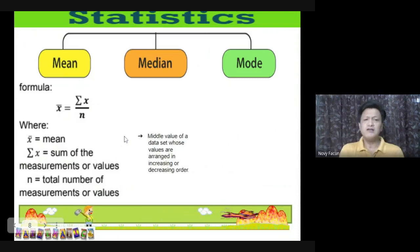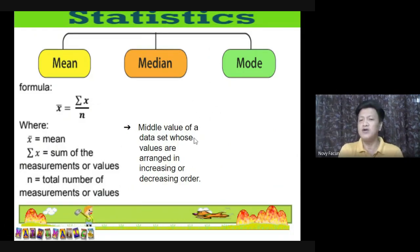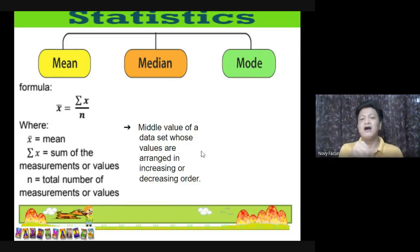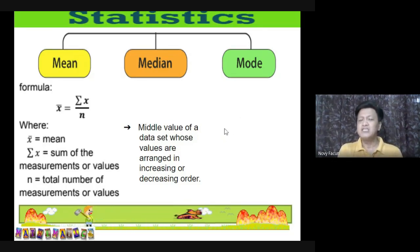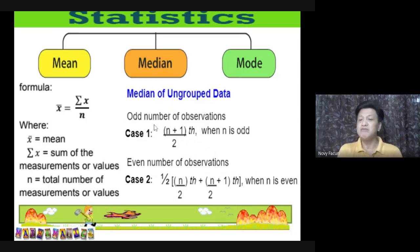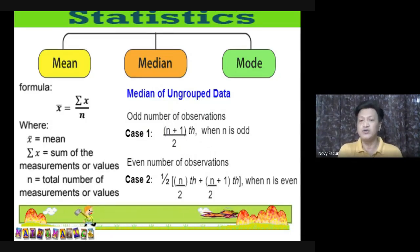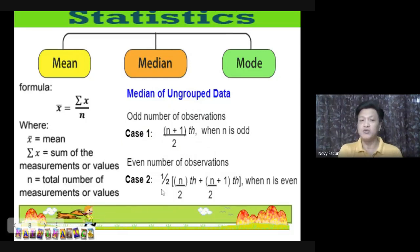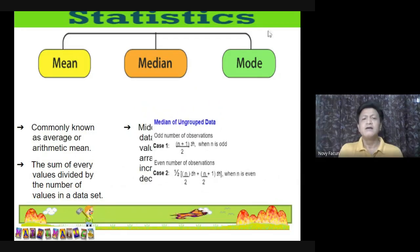For the median — the median is the middle value or middle point of the data set whose values are arranged in increasing (lowest to highest) or decreasing (highest to lowest) order. You must arrange the data first before finding the median. There are two cases: Case 1 is for an odd number of observations (not divisible by 2: 1, 3, 5, 7, 9...). Case 2 is for an even number of observations (divisible by 2: 2, 4, 6, 8, 10...).